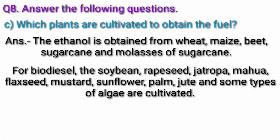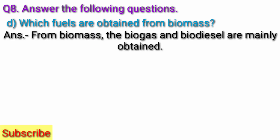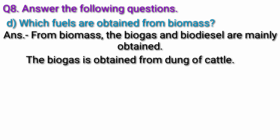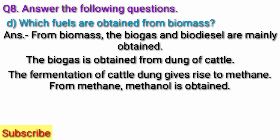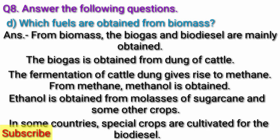Question D. Which fuels are obtained from biogas? Answer: From biogas, biogas and biodiesel are mainly obtained. The biogas is obtained from dung of cattle. The fermentation of cattle dung gives rise to methane. From methane, methanol is obtained. Ethanol is obtained from molasses of sugarcane and some other crops. In some countries, special crops are cultivated for biodiesel.